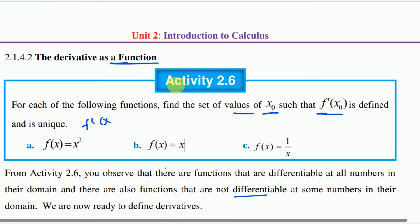F derivative at x-not is defined and it's unique. The set of values of x-naught such that f derivative at x-naught is defined and it's unique.